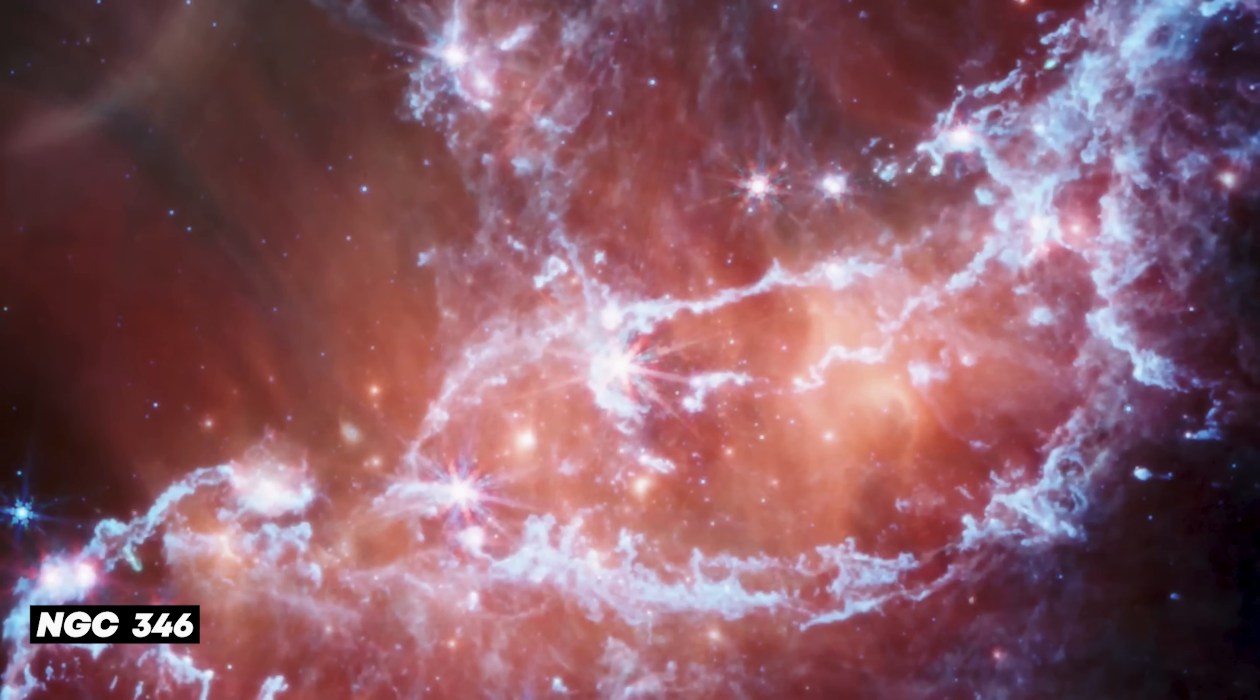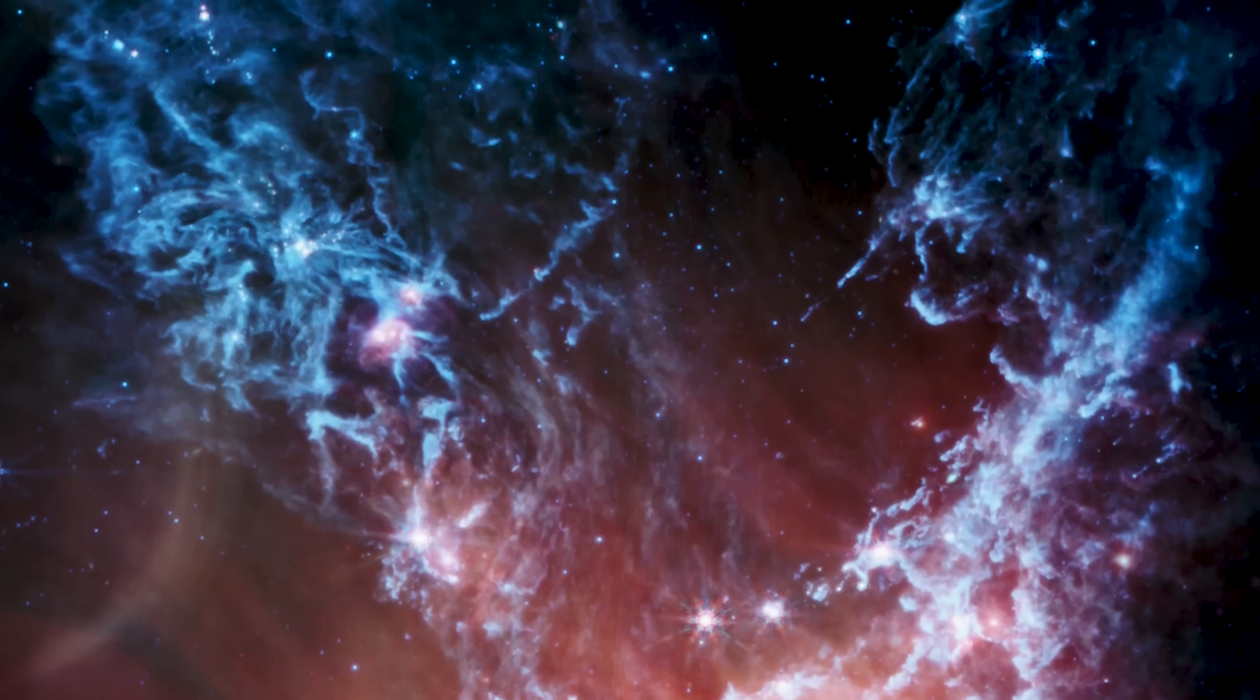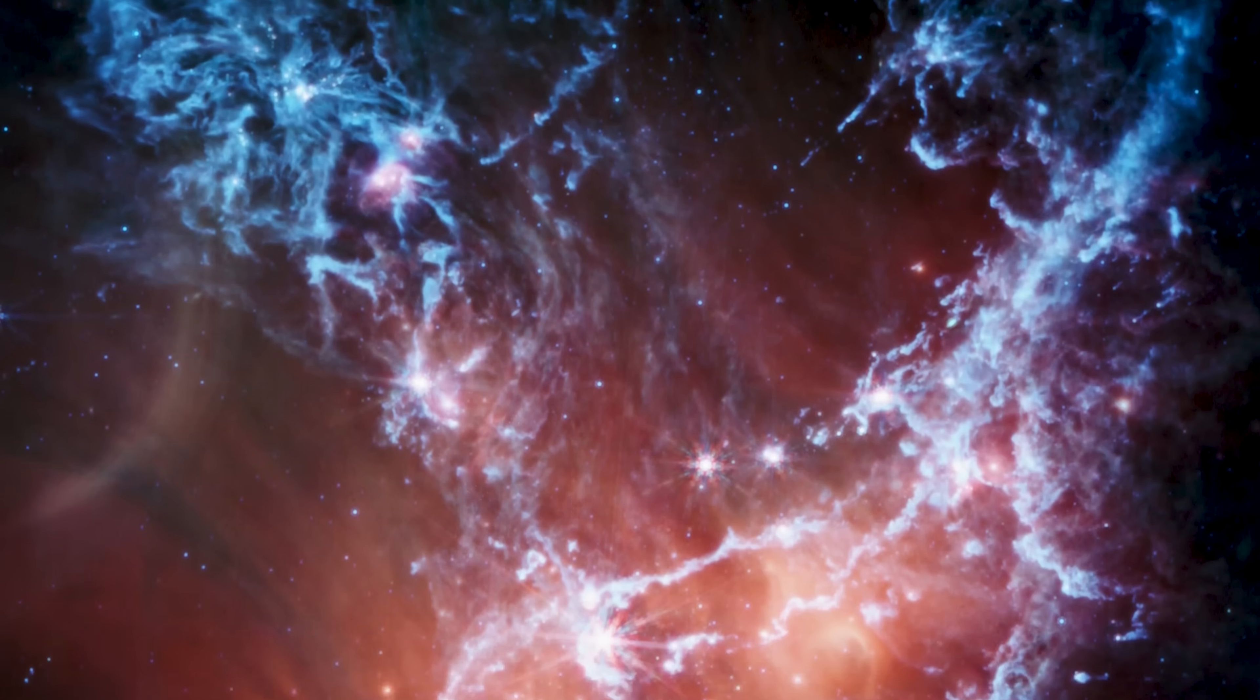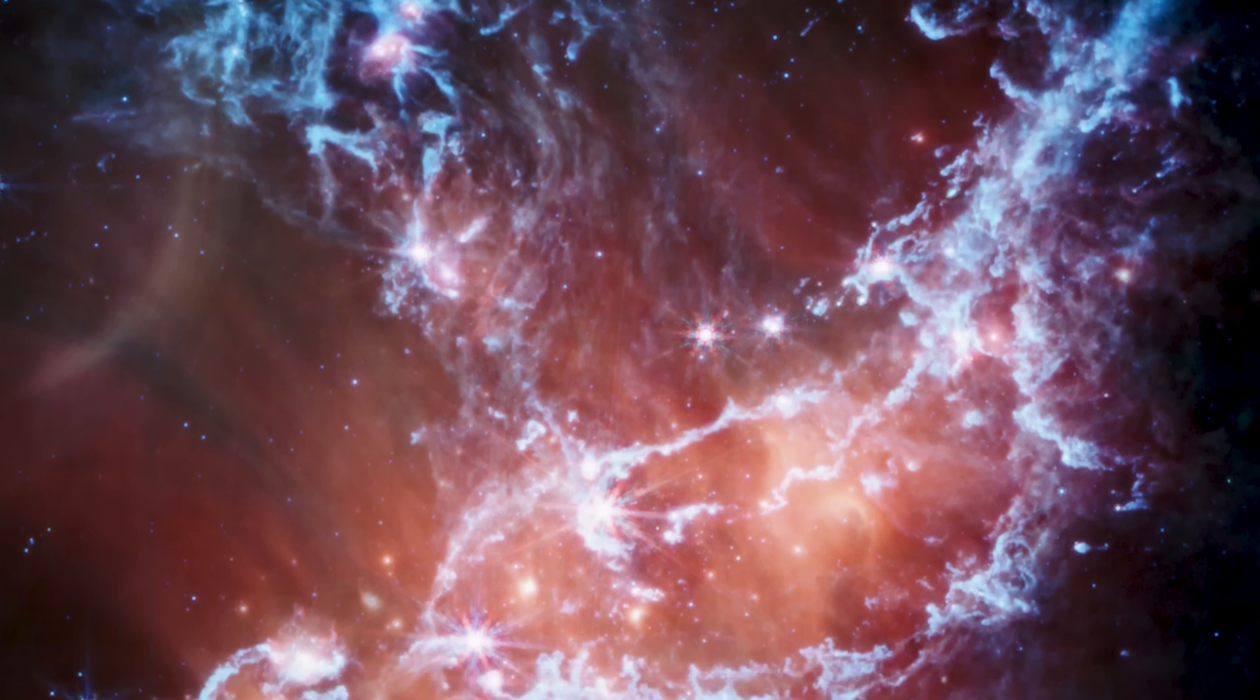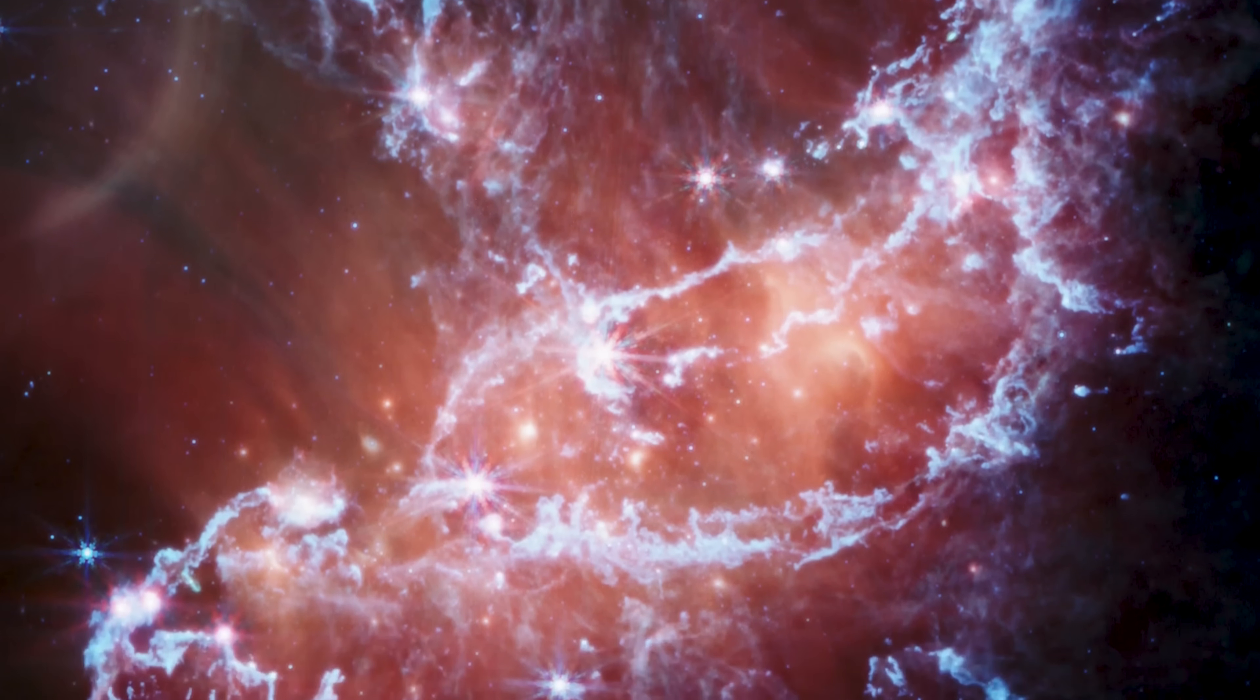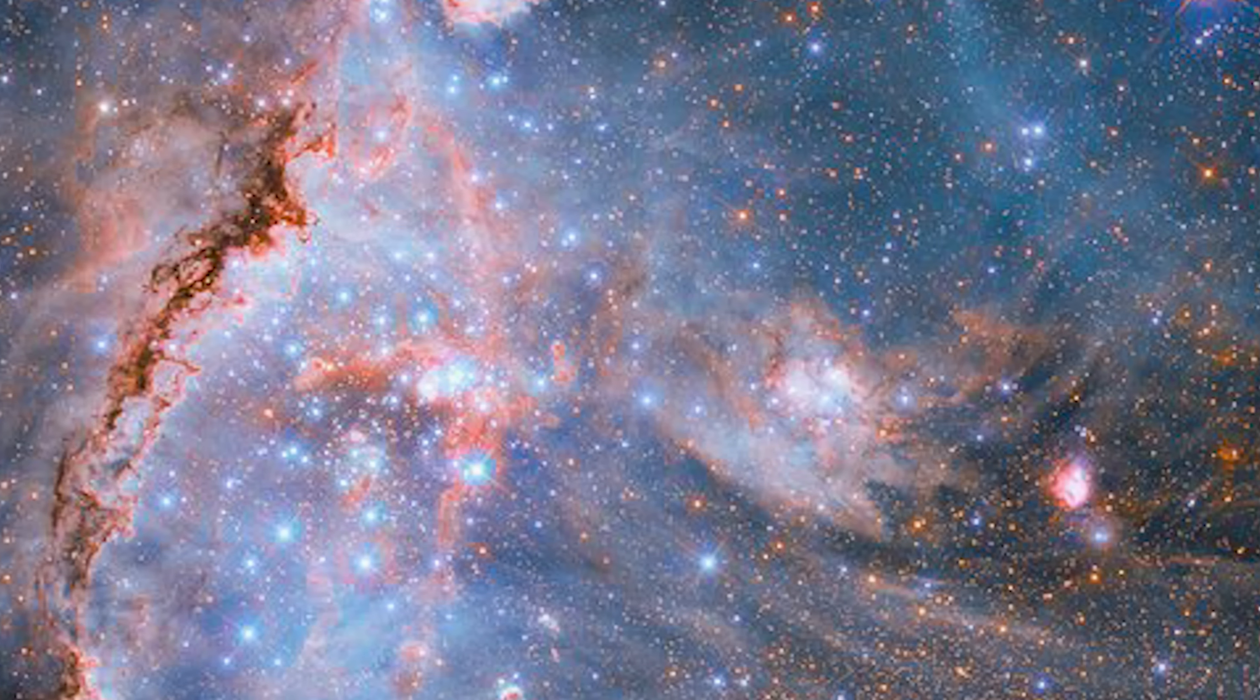In NGC 346, a stellar nursery within the Small Magellanic Cloud, Webb exposes young, massive stars still emerging from their dusty cocoons. Jets of material, dense gas clouds, and pockets of intense radiation reveal the complex physics driving early stellar evolution. Here, astronomers witness the birth of suns in environments far different from our own, a reminder that star formation is both universal and endlessly diverse.